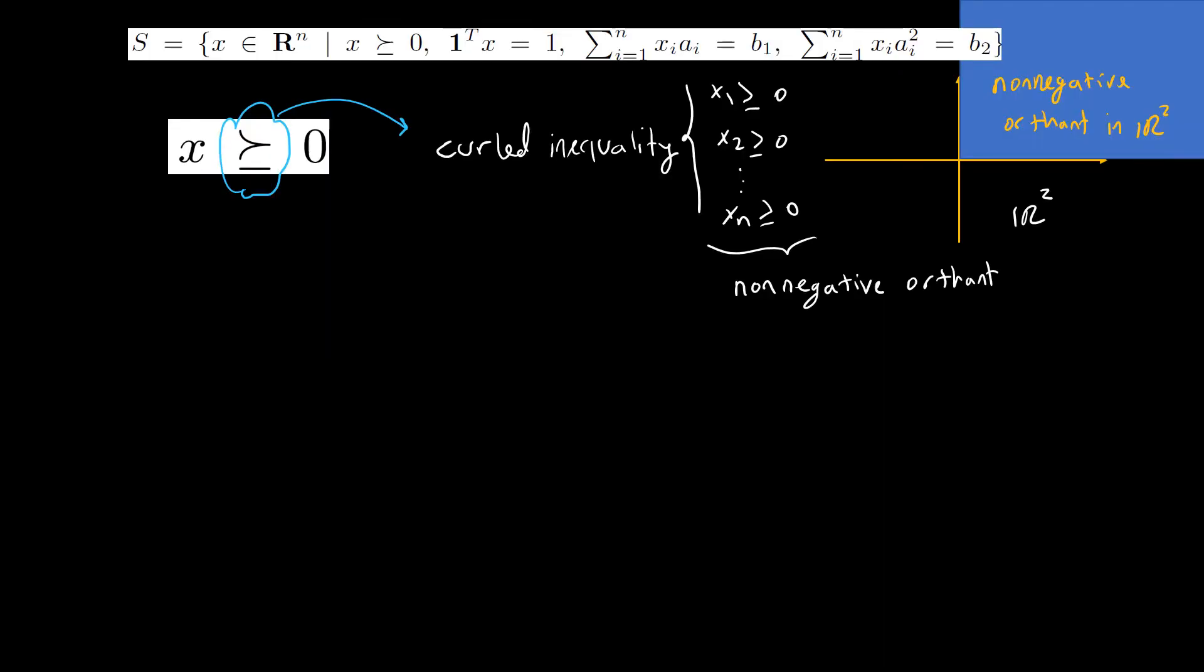Let's look at the first constraint that we have. This sign is called the curl inequality. It is the generalization of an inequality when you are considering vectors like x, which is a vector in R^n. It represents component-wise inequality, therefore we have n inequalities.